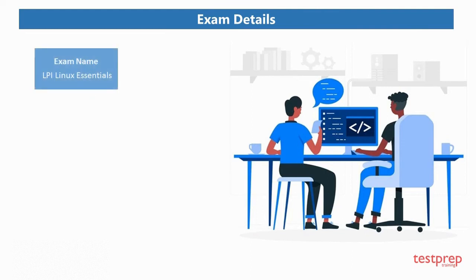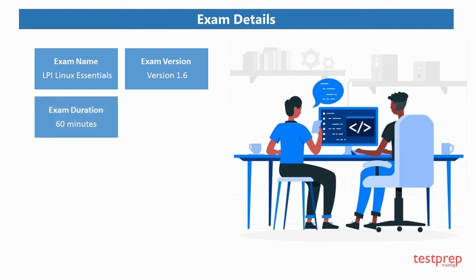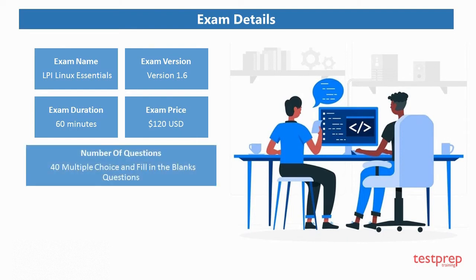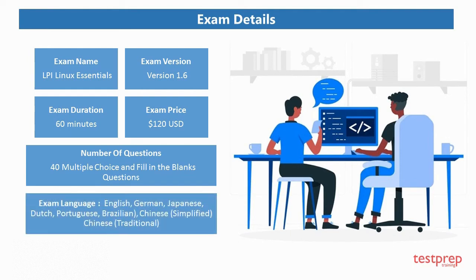Exam details: Exam name is LPI Linux Essentials. Exam version is 1.6. Exam duration is 60 minutes. Exam price is 120 US dollars. Number of questions are 40 multiple choice and fill-in-the-blank questions. Exam languages include English, German, Japanese, Dutch, Portuguese, Brazilian Portuguese, Simplified Chinese, and Traditional Chinese.